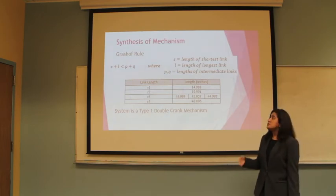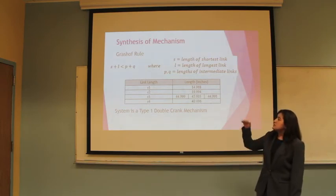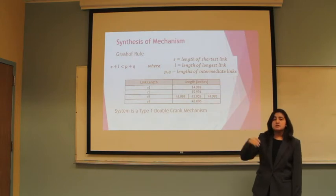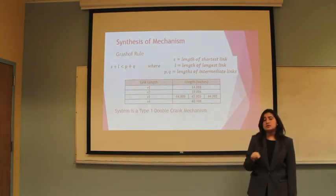Lastly, we needed to use Grashoff's rule to make sure what type of mechanism we had. We found that using S plus L, which is the shortest length plus the longest length, is less than the two intermediate links sum. We found that we had a type 1 mechanism, and since the shortest length is at the bottom, that means that we have a double crank mechanism.